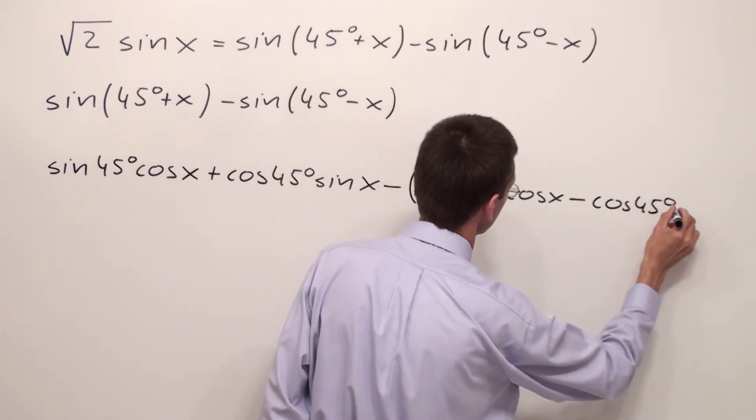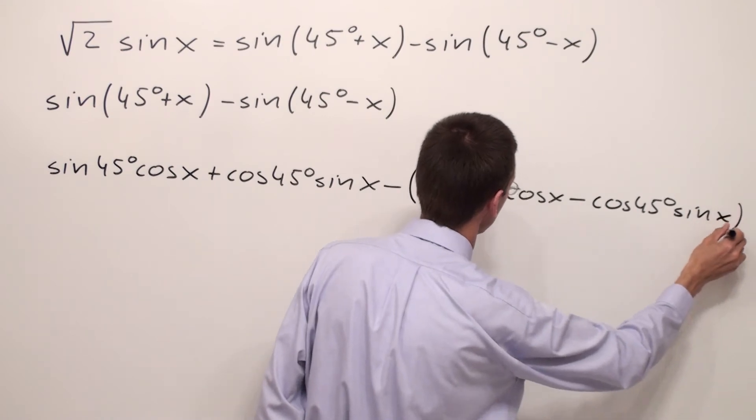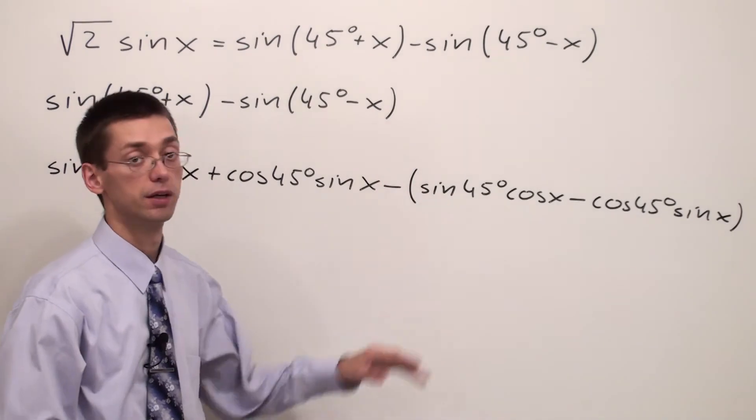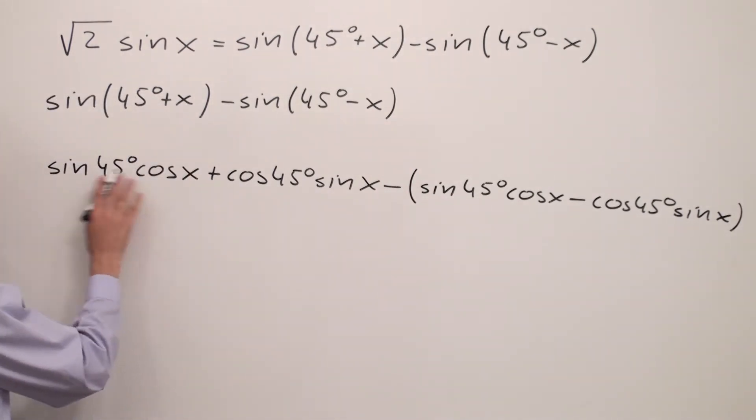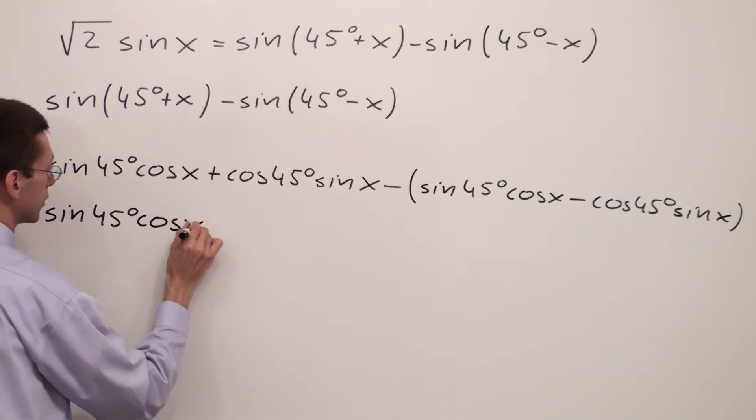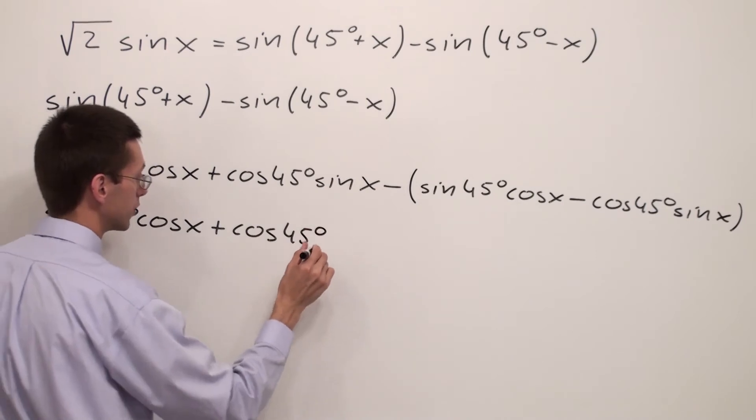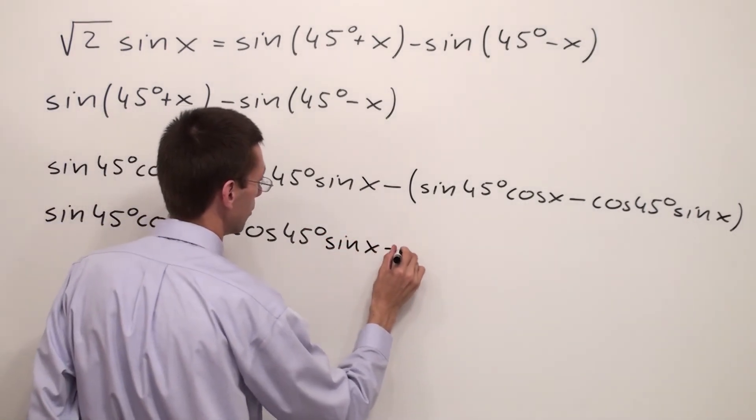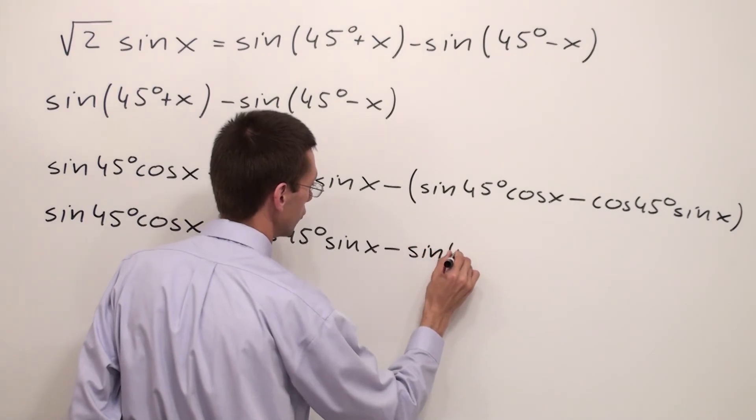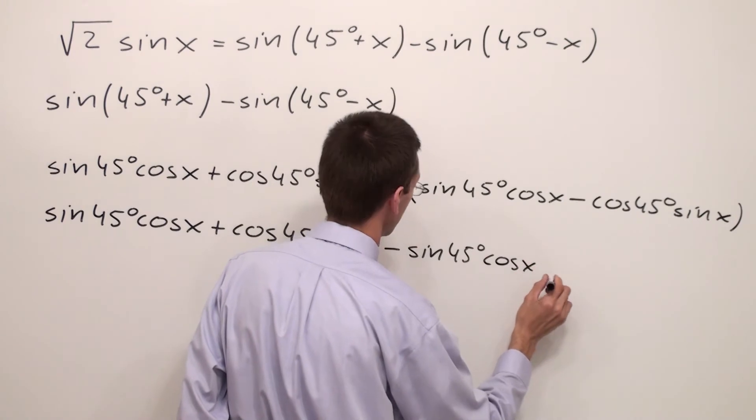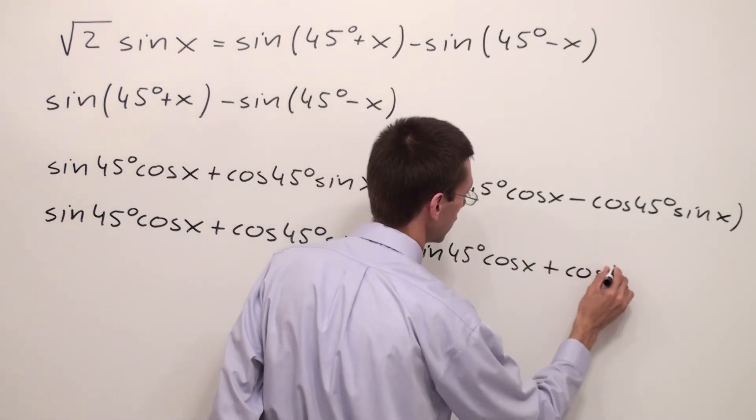Next I'm supposed to remove the parentheses. Copy down the first part: I have sine 45° cosine x plus cosine 45° sine x minus sine 45° cosine x plus cosine 45° sine x.